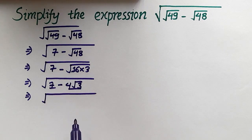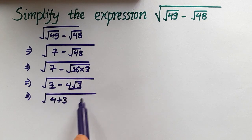Notice that 7 is the same as 4 + 3, so let's write √(4 + 3 - 4√3).